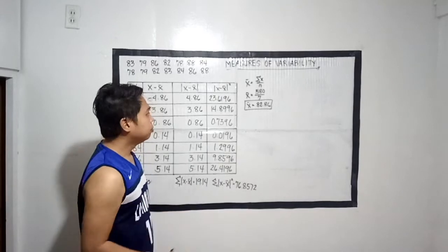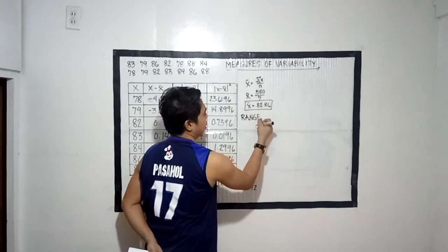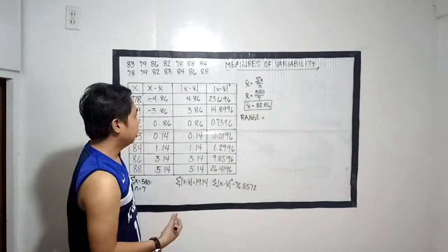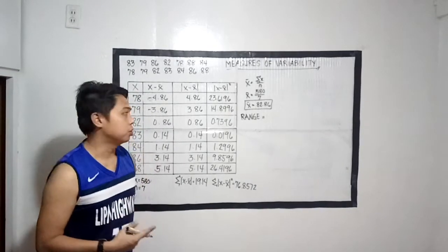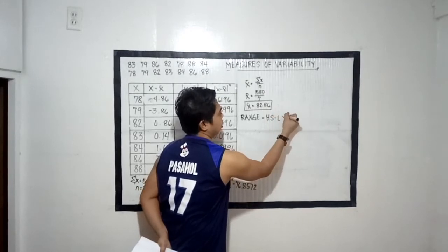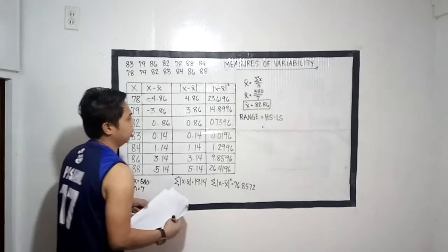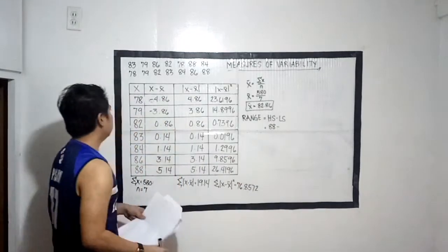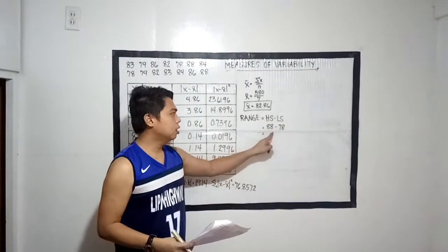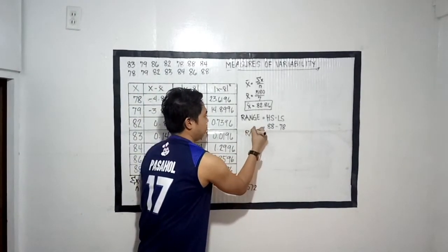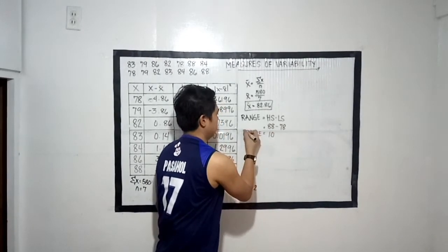So to summarize: summation of x = 580, n = 7, summation of |x minus mean| = 19.14, summation of (x minus mean)² = 76.8572. Now we have to get the range. Para makuha ang range, kailangan nating kunin ang difference ng highest score at lowest score. So: highest score 88 minus lowest score 78 is equal to 10. This is our range.